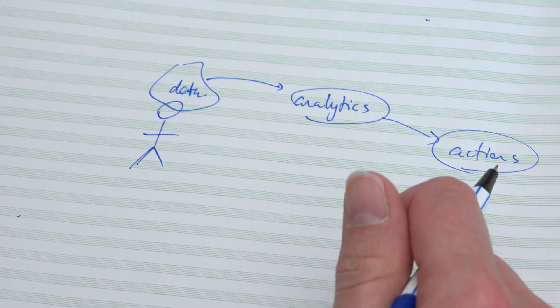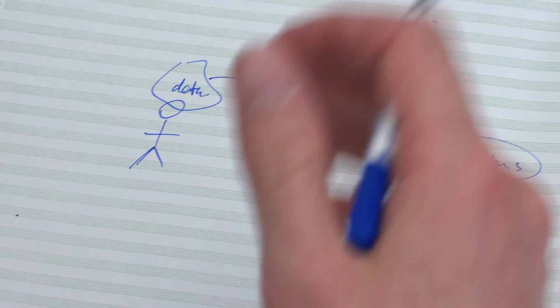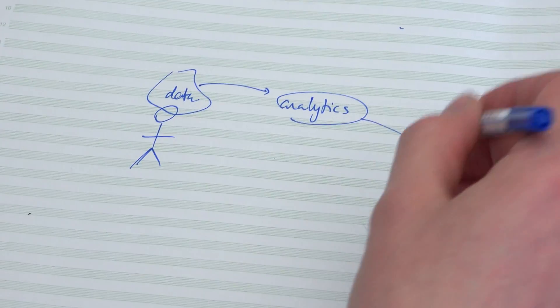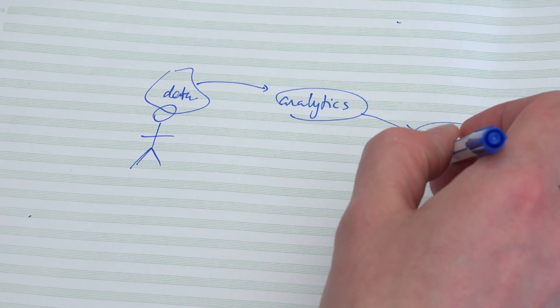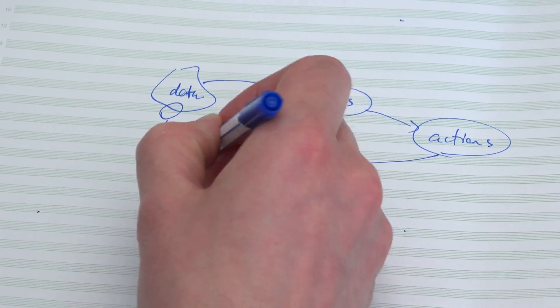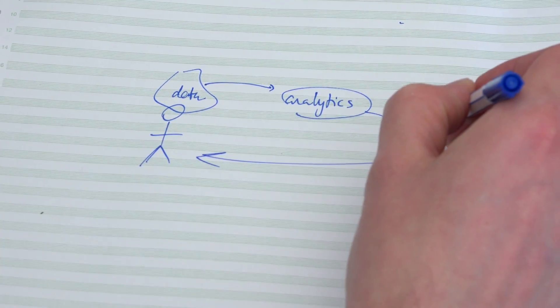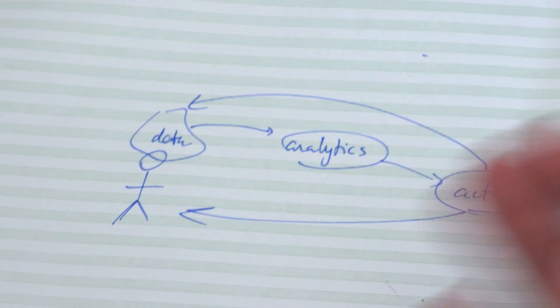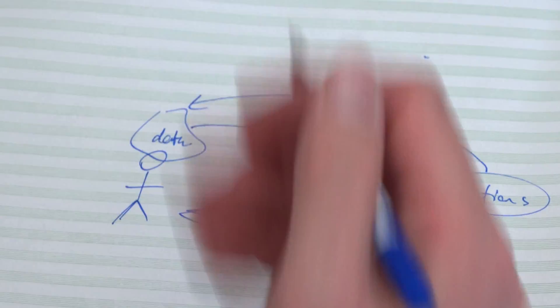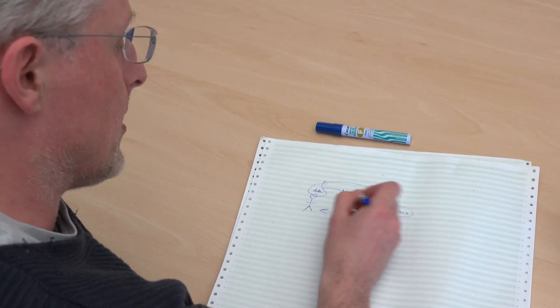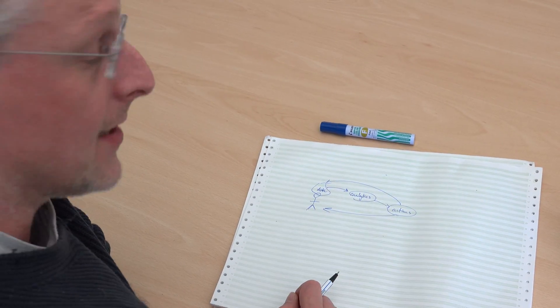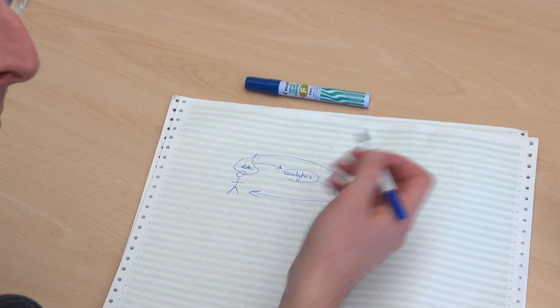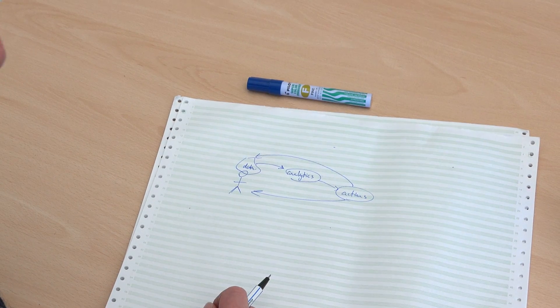Something happens in the world as a result - you get a particular credit score, you get your mortgage or you don't, your insurance premium changes. And those actions change your behavior, or might involve more data inferences being put back into the data set which are then used for further analytics. So you've got the opportunity for feedback loops where the behavior you have generates things that change your behavior and so on.